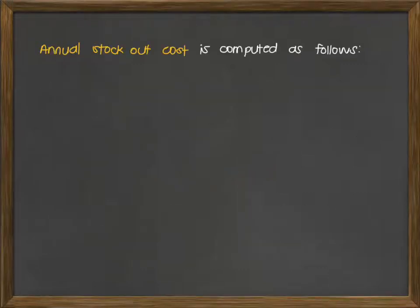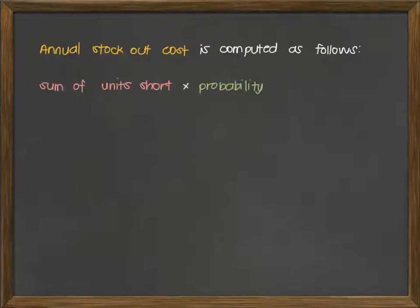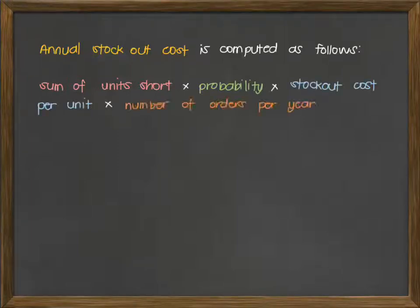The annual stock out cost is computed as the sum of the units short, multiplied by the probability, multiplied by the stock out cost per unit, and multiplied by the number of orders per year.